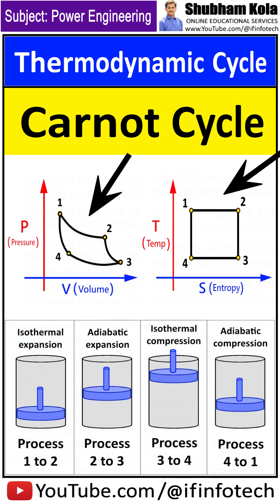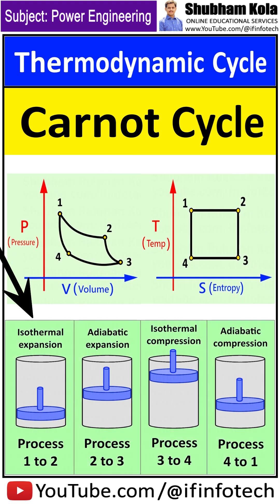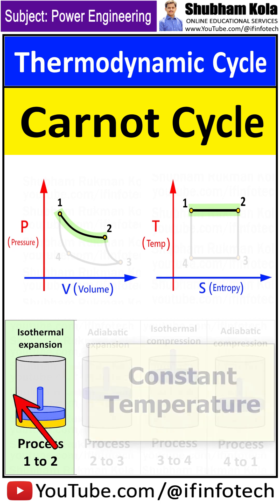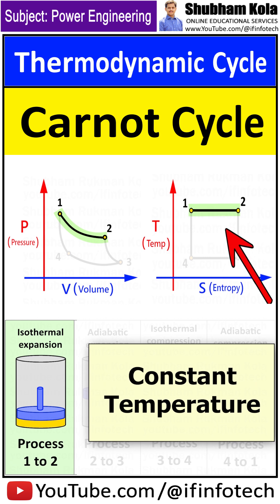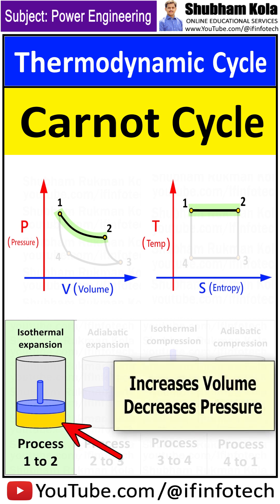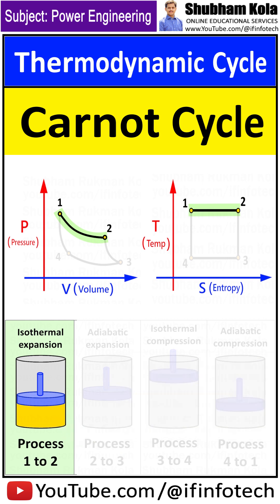Let's discuss how the Carnot cycle works by exploring four thermodynamic processes. Process 1 to 2 is the reversible isothermal expansion process. Isothermal means temperature is constant. During this process, the amount of heat absorbed by the ideal gas is Q in, from the heat source at temperature Th. The gas expands, which increases volume and decreases pressure, and does work on the surrounding.